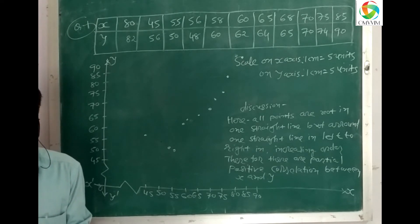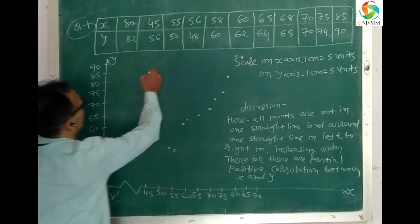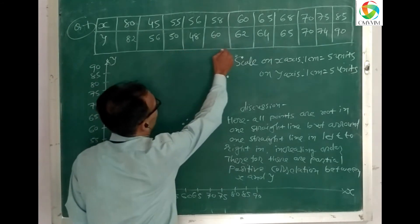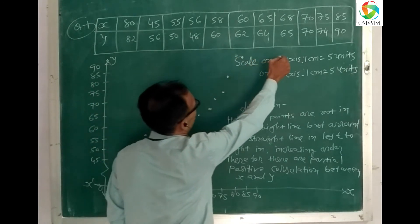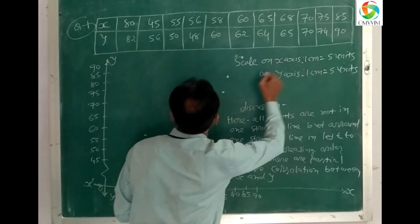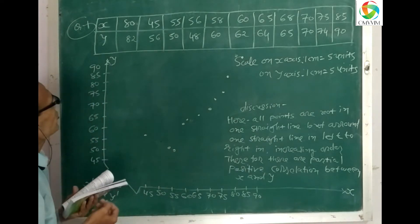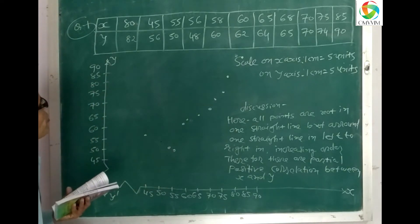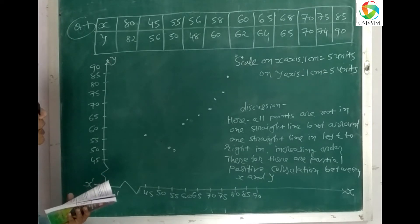x is equal to 18, 45, 55, 56, 58, 60, 65, 68, 75, 85. And y is equal to 82, 56, 50, 48, 60, 60, 62, 64, 65, 70, 74, 90.